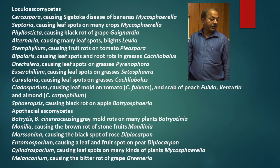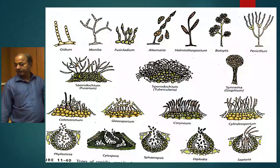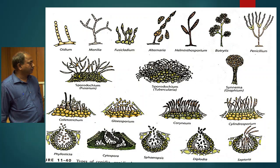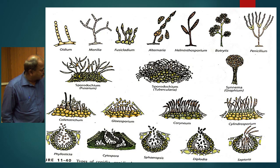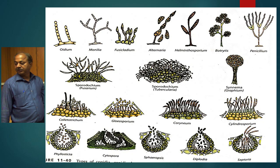Then Botrytis, Monilinia, Marssonina, then Phaeosporium, then Cylindrosporium, Melanconium — these genera have their perfect stages coming under apothecial Ascomycetes. The conidia of distinct types — how they look in apothecia, in acervuli, in pycnidia, how conidia are produced — are depicted in the pictures.